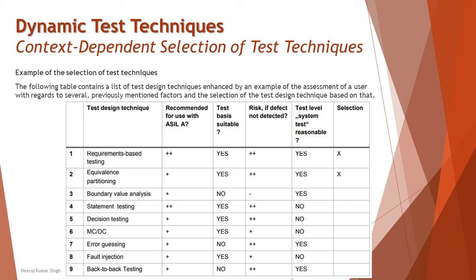If you see here, the first two techniques — though having some variation regarding their ASIL level — are recommended, the basis is available, and system test level is recommended for them. So you can make use of both: requirement-based technique and equivalence partition. The tester has selected these two techniques to be applied.